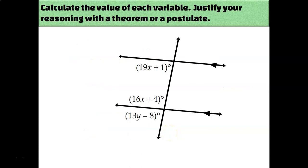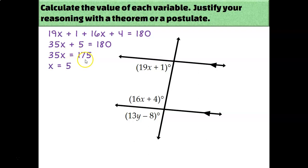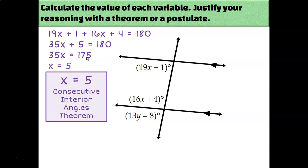Let's kick it up one more notch by having both algebra and two variables to solve for. In this situation, solve with the expressions that share the same variable first. I have two expressions with x and one with y, so I'll focus on the two x expressions. These are consecutive interior angles — on the left side of the transversal and in between the two parallel lines — so they must be supplementary. The equation is 19x plus 1 plus 16x plus 4 equals 180. Combining gives 35x plus 5 equals 180, so subtract 5 and divide by 35 to get x equals 5, by the consecutive interior angles theorem.